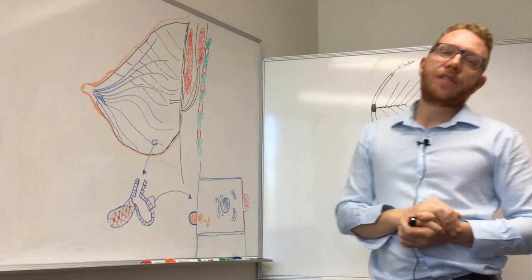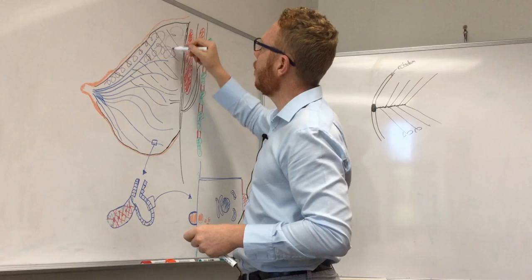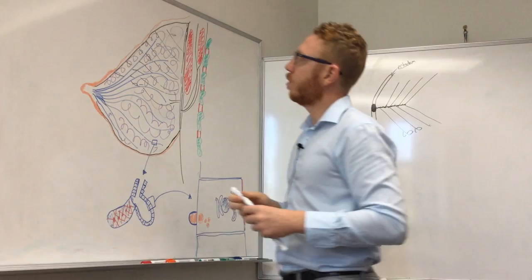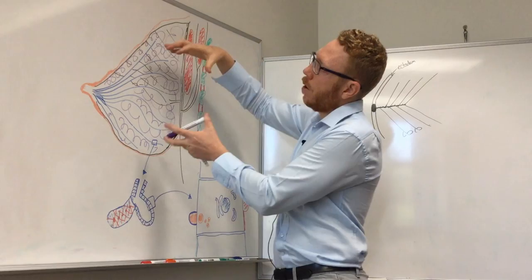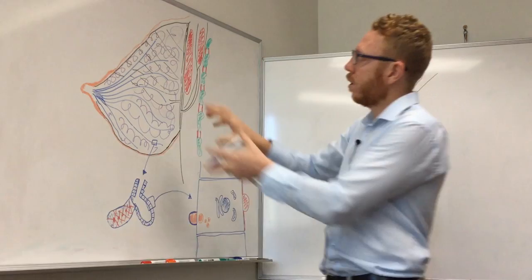Estrogen is also very important in producing fat. In fact, 80 to 85 percent of the breast is actually adipose tissue or fat. So the majority of the size of the breast is driven by fat, which is driven by estrogen — the estrogen from puberty is what gives the bulk to the breast. Cooper's ligaments give the shape to the breast. Estrogen gives the ductal system, whereas progesterone gives more of the lobules and alveoli.